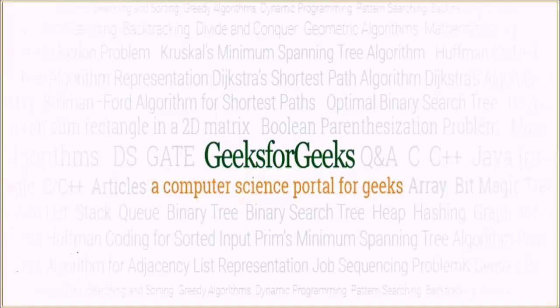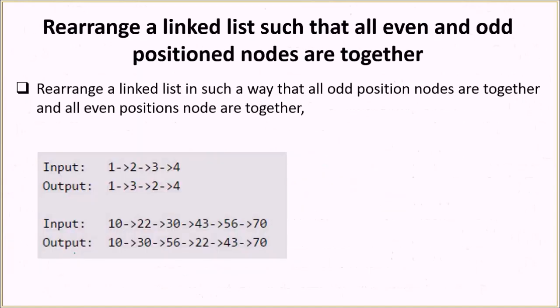Hello everyone and welcome to GeeksforGeeks. Today the problem we are going to see is to rearrange a linked list such that all even and odd positioned nodes are together. The point to note is that you don't have to put all the even and odd values together — you just have to put the even and odd positioned nodes together.